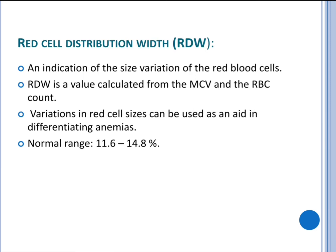Red cell distribution width (RDW) is an indication of the size variation of red blood cells. RDW is a value calculated from the mean corpuscular volume and the red blood cell count. Variations in red cell sizes can be used as an aid in differentiating anemia. The normal range of red cell distribution width is 11.6 to 14.8 percent.